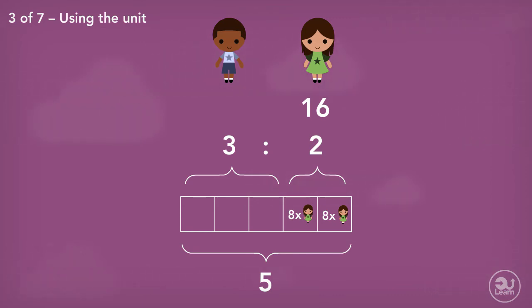In our ratio, we had the boy toddlers representing three parts. This means we take our one part and multiply it by three. So, eight times by three equals 24 boy toddlers. This means that in total, there are 24 plus 16 toddlers, which equals 40 toddlers at the park.